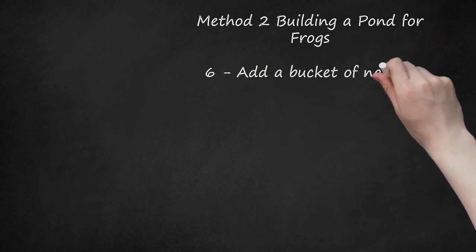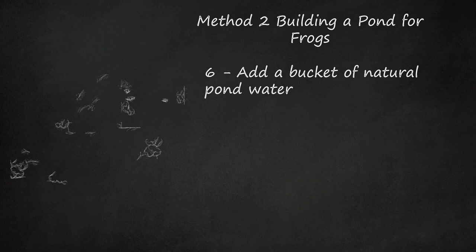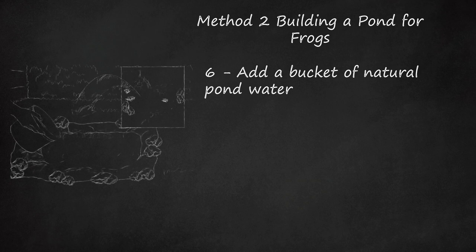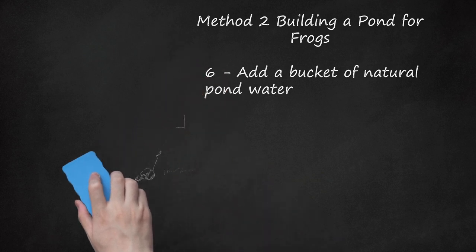6. Add a bucket of natural pond water. If you mix in a bucket full of water taken from a local marsh or pond, it will introduce millions of microscopic organisms that can jump start your pond's ecosystem. They will infuse the water with oxygen, making it more livable and appealing to native frogs in your area. You can also try planting a few native water plants in your pond to attract local frogs. Just make sure that the plants don't overtake the whole pond and choke other wildlife out.